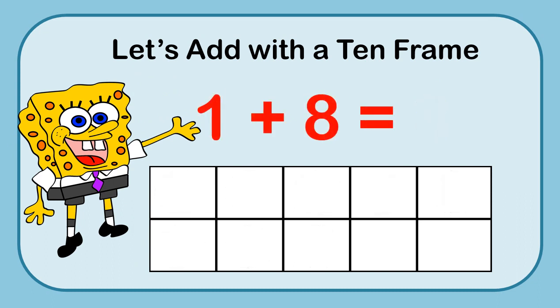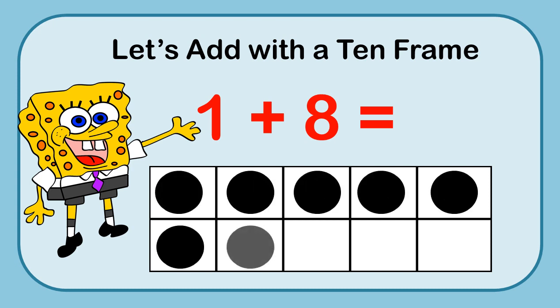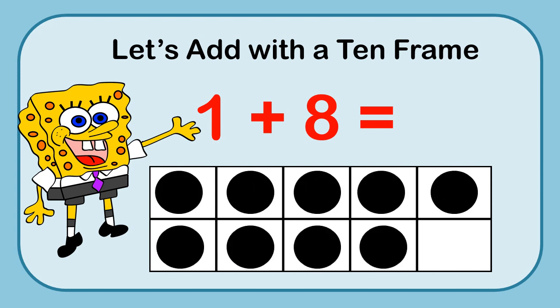Now I'm going to look at the equation 1 plus 8. I put my 1 marker and 8 more: 1, 2, 3, 4, 5, 6, 7, 8. Then I can count them all up: 1, 2, 3, 4, 5, 6, 7, 8, 9. Or I can say there's 5 and then count up from there: 6, 7, 8, 9. So 1 plus 8 equals 9.